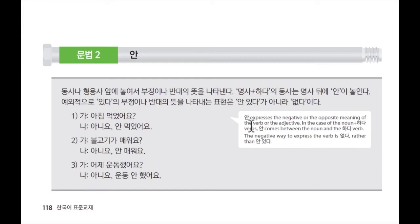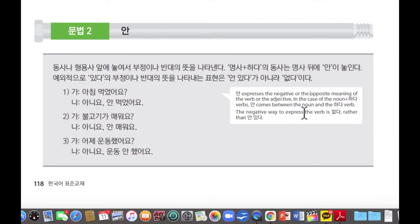So that means 안 expresses the negative or the opposite meaning of the verb or the adjective. In the case of the noun plus 하다 verbs, 안 comes between the noun and the 하다 verb. The negative way to express the verb 있다 is 없다 rather than 안 있다.